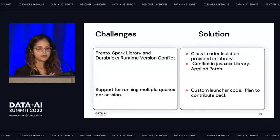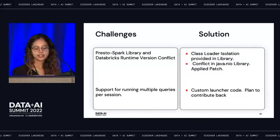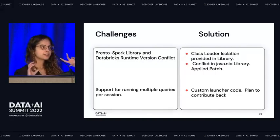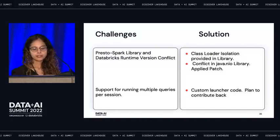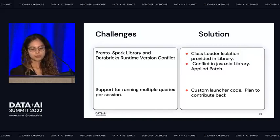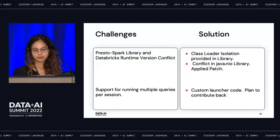The second challenge: the Presto open source library can only run one query at a time, but we required running an entire script. As mentioned, Presto produces two artifacts — a launcher JAR and the Presto Spark dependency package. We replaced Presto's launcher code with our custom launcher code built on top of Simplan, with the fix applied there. We plan to contribute it back to open source or open source Simplan later.